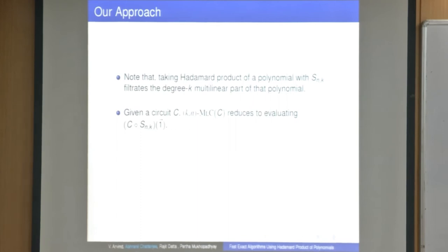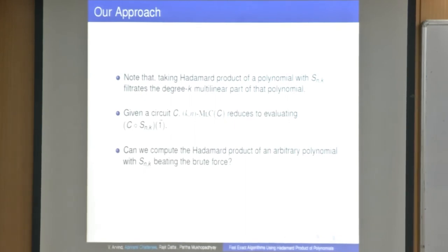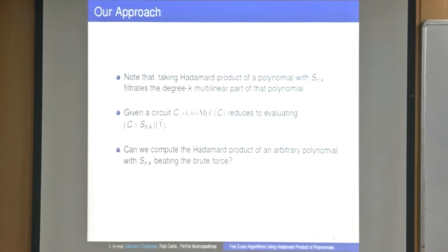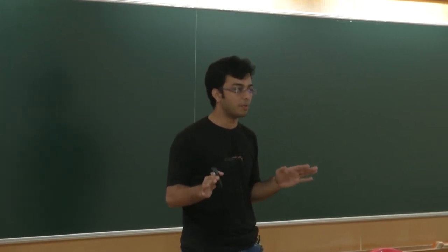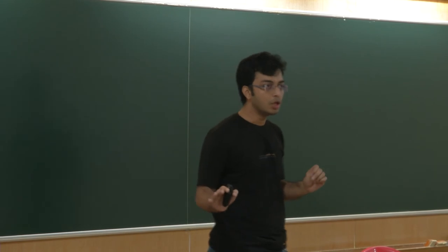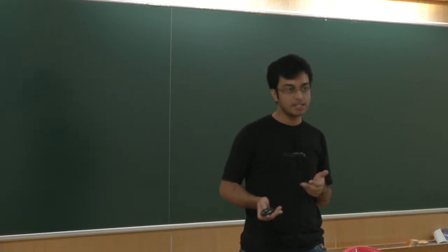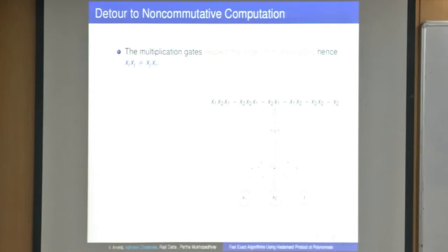We want to compute the Hadamard product of an arbitrary polynomial with the elementary symmetric polynomial SNK, beating the brute force. One approach is to reduce to known cases where Hadamard product is easy to compute. For the commutative Hadamard product, it is difficult — for example, computing the Hadamard product of the determinant would give the permanent. So we want to reduce this problem to some known cases. For that, we make a detour to non-commutative computation.